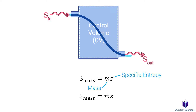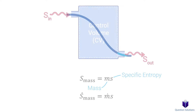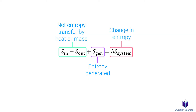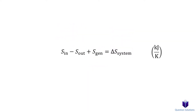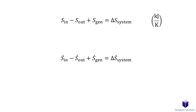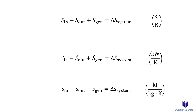Now that we have an idea of how entropy transfers in and out of a system, let's go back to our entropy balance equation. The net entropy transfer by heat or mass, plus the entropy generated through the process within the system, gives us the change in entropy. The units are kJ/K. This equation can also be written in rate form with units of kW/K, or per unit mass basis with lowercase letters.